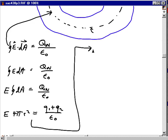E is equal to, I'm just dividing both sides by the 4 pi r squared. So I get 1 over 4 pi epsilon 0 times q1 plus q2 all over r squared.